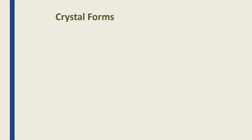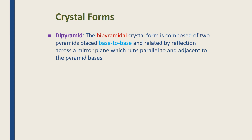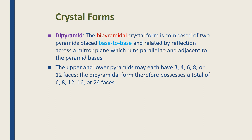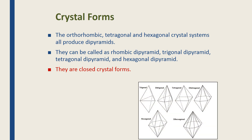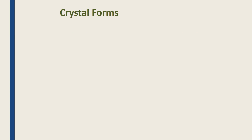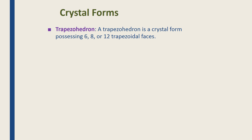For closed forms we have bipyramids or dipyramids — two pyramids placed base to base, related by reflection across a mirror plane running parallel to the adjacent pyramid bases. The upper and lower pyramids may have three, four, six, or eight faces; they meet each other at their bases, forming closed crystal forms. All of the shapes shown here are bipyramidal.